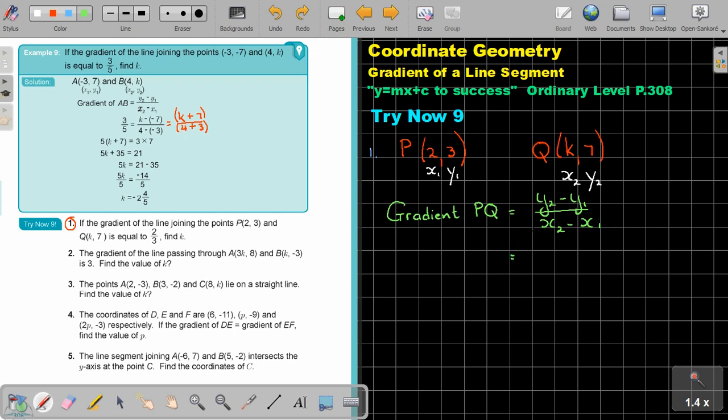And then I substitute. In the place of y, I say 7 minus 3. And in the place of x, I say k minus 2. And the gradient. What is the gradient? 2 over 3.